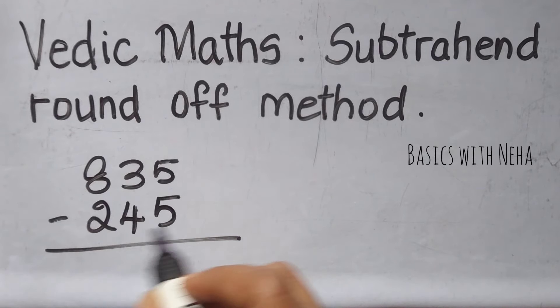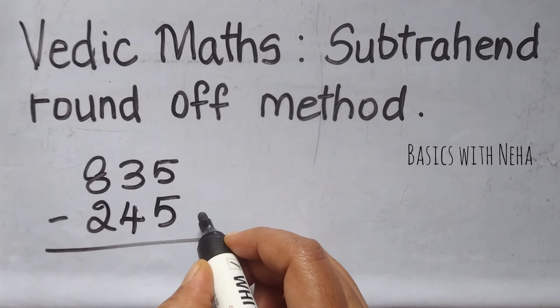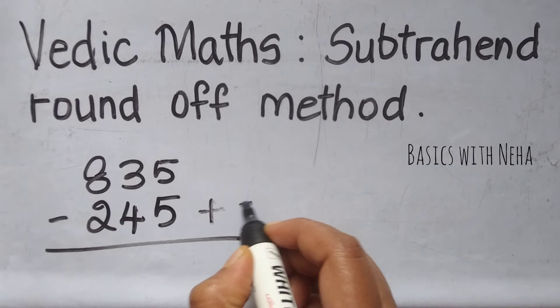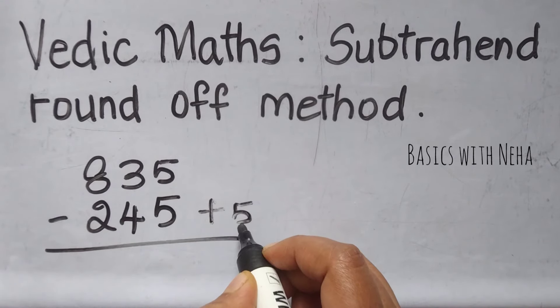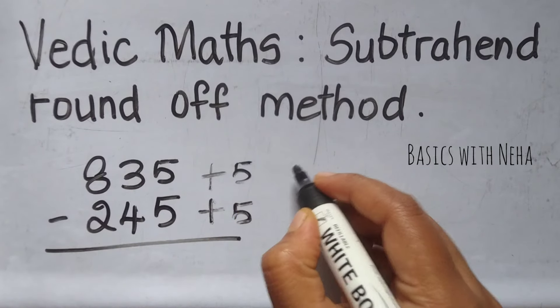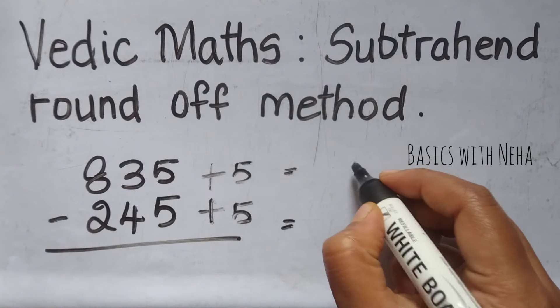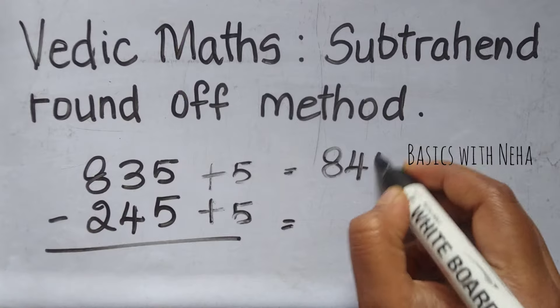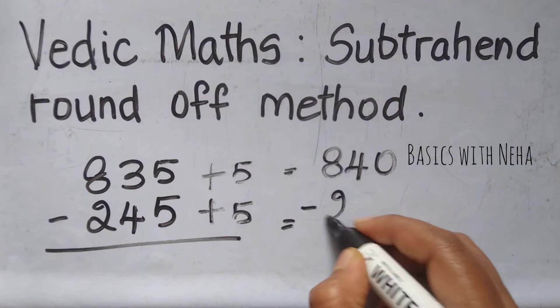So I'm going to round this off to 250. To round this off to 250, I have to add 5 to this. So if I add 5 to the subtrahend, I'll have to add 5 to the minuend as well. So the new question that is going to be formed will be 840 minus 250.